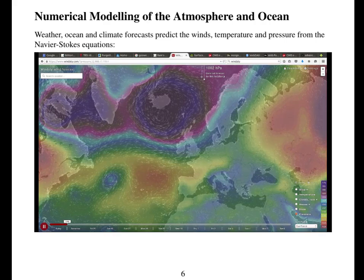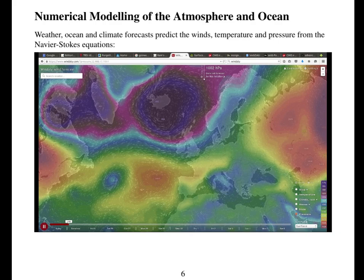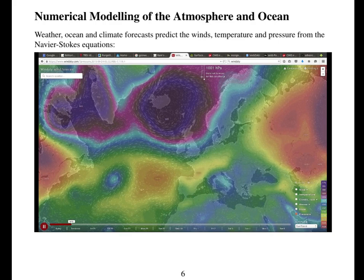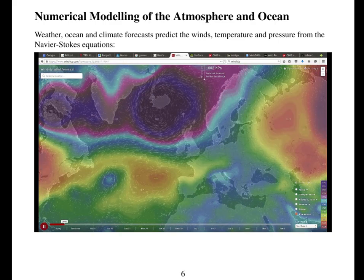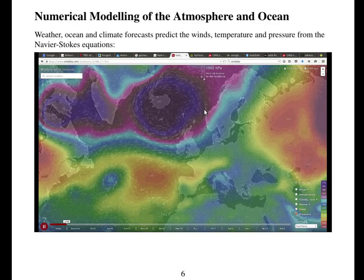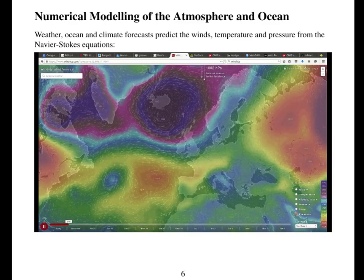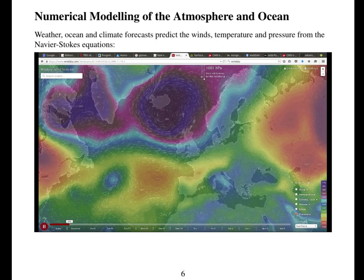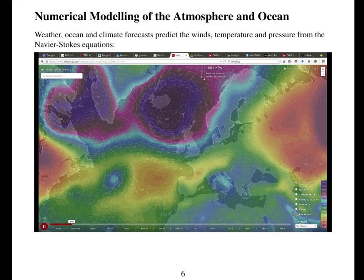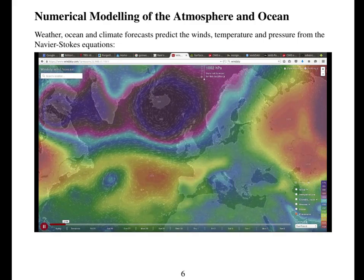This animation is a numerical solution of the Navier-Stokes equations for a weather forecast model downloaded from Windy T site. So you can see the arrows representing the wind and the color representing the pressure. So these wind, pressure and temperature are predicted by weather and atmosphere and ocean models from the Navier-Stokes equations.